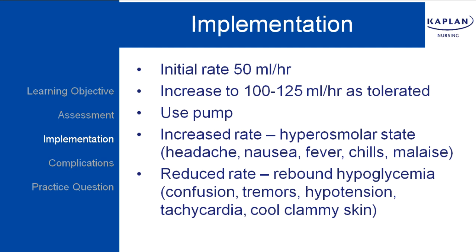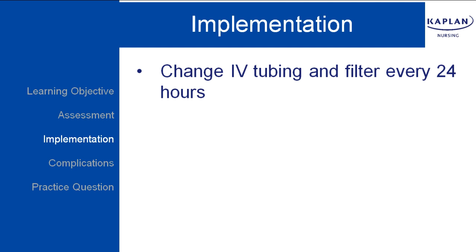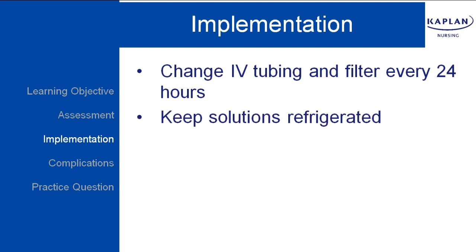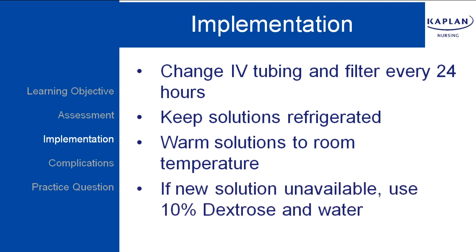A slower rate will drop the blood sugar and will result in rebound hypoglycemia. The client will exhibit confusion, tremors, hypotension, tachycardia, and cool, clammy skin. Additional interventions include changing the IV tubing and filter every 24 hours to reduce the risk of infection. Keep solutions refrigerated at all times and warm to room temperature prior to administering. If the client's parenteral nutrition is running low and a new solution is not readily available, use 10% dextrose and water temporarily to avoid rebound hypoglycemia.